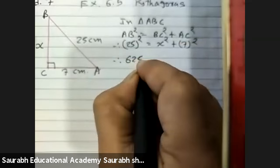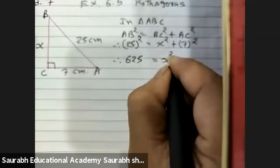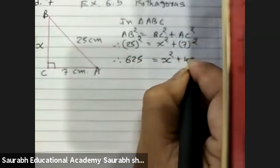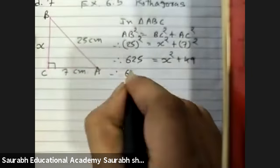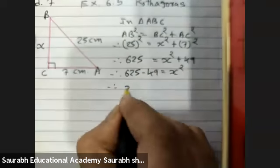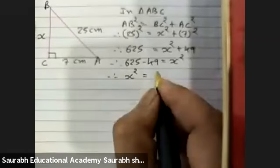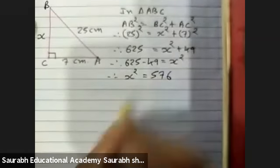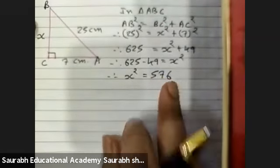25 squared is 625. So 625 equals X square plus 49. Therefore, 625 minus 49, X square equals 576.